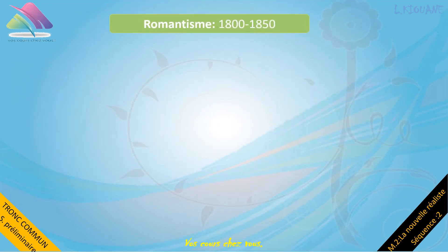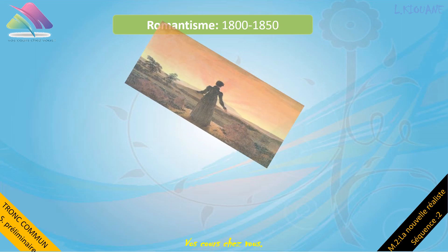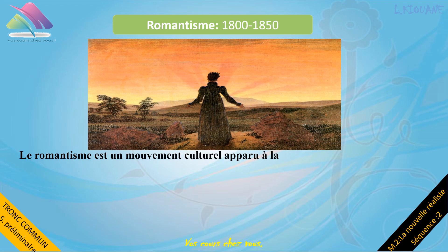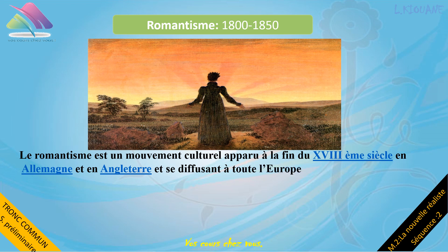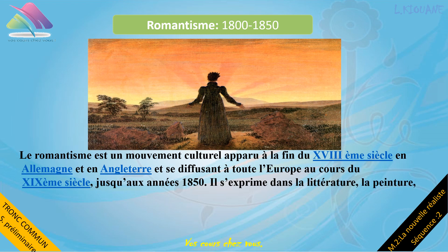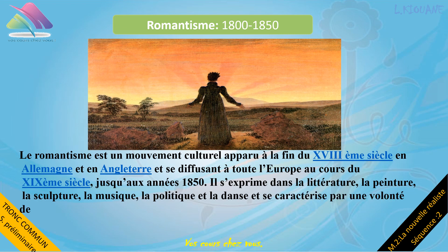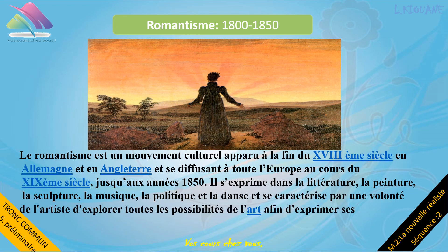Avant de passer au réalisme, nous allons tout d'abord aborder le romantisme. C'est un mouvement culturel apparu à la fin du XVIIIe siècle en Allemagne et en Angleterre et se diffusant à toute l'Europe au cours du XIXe siècle, jusqu'aux années 1850. Il s'exprime dans la littérature, la peinture, la sculpture, la musique, la politique et la danse, et se caractérise par une volonté de l'artiste d'explorer toutes les possibilités de l'art afin d'exprimer ses états d'âme.